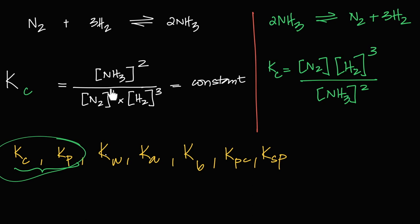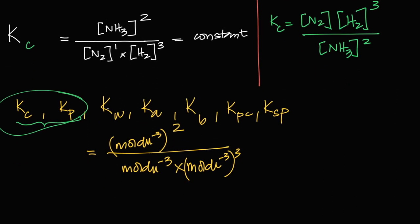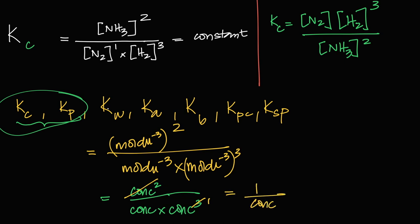To find the units of Kc: in the Haber process expression, the numerator has concentration squared (two terms) and the denominator has concentration to the power of four (1+3). Simplifying, you get 1 over concentration squared, which is concentration to the power of minus two. That gives units of mol⁻² dm⁶, since concentration is mol per dm³ raised to the power of minus two.